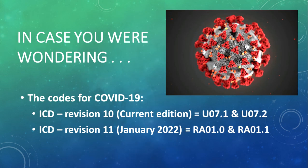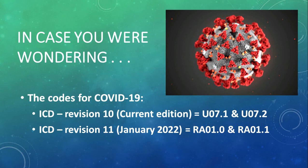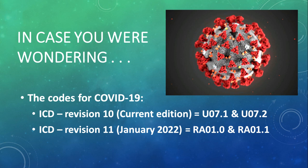In case you were wondering, with COVID dominating our news, the ICD has been updated with a code for COVID-19. In revision number 10, there is a selection of emergency codes that can be updated instantly rather than waiting until the next revision. Anything starting with a U is an emergency code. For now, on death certificates they are using U07.1 to represent that a person died of COVID. In January 2022, revision number 11 will come out and that COVID number will be switched to RA01, giving it a more permanent position in the ICD index.